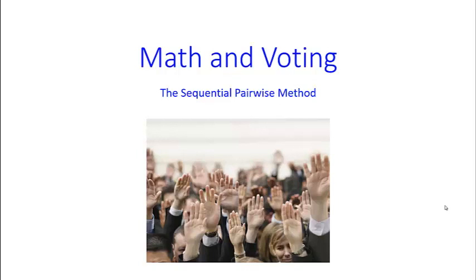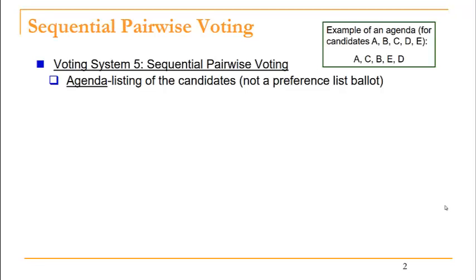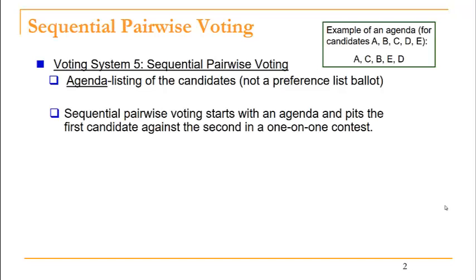This video will focus on the voting method called sequential pairwise voting. In this method, we use something called an agenda, which is just a listing of the candidates. For example, if we have an election with candidates A, B, C, D, and E, then an agenda might be the list A, C, B, E, D.